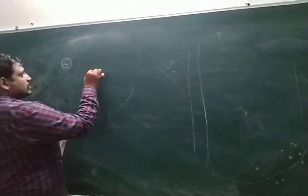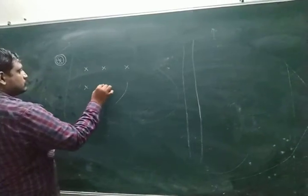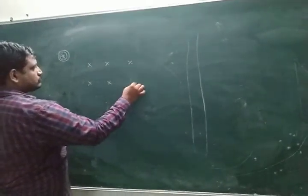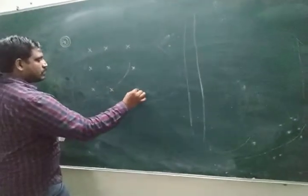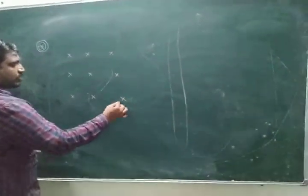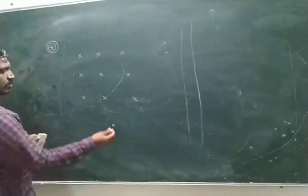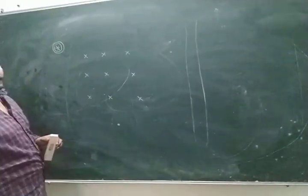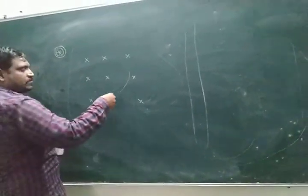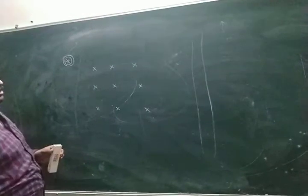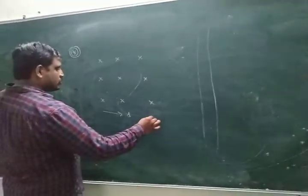Look here — this is the magnetic field. This symbol means magnetic field into the board. This symbol means magnetic field out of the board. The width of the magnetic field region is shown here.